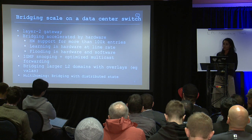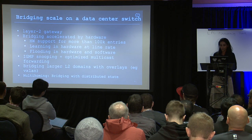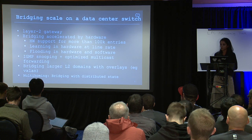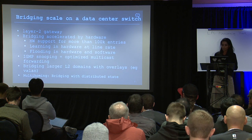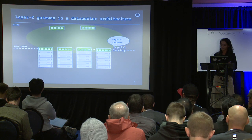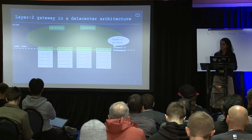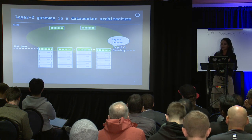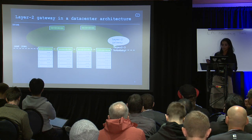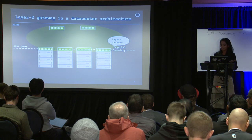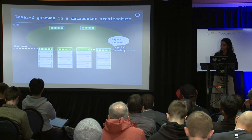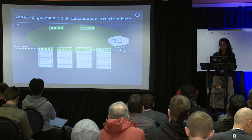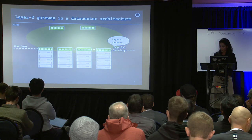Where does the scale come from on the bridge? It's larger layer two domains. You're bridging many hosts in multiple racks. These racks are in pods, and you use spine switches to actually connect all of them together. This can span data centers as well.